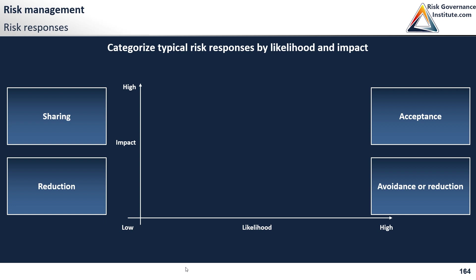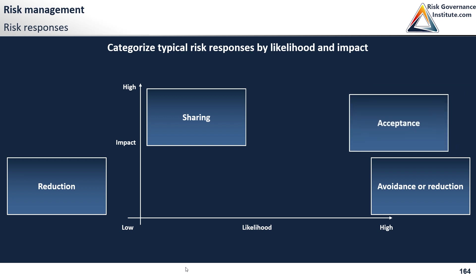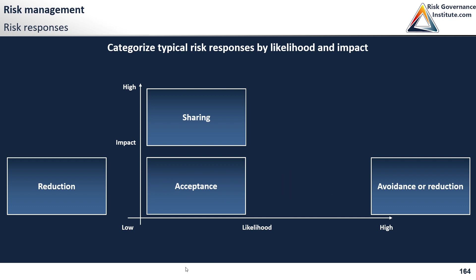Let me describe a scenario: you are afraid your house might be damaged by an earthquake. It is low likelihood and high impact. Usually it would be sharing — for example, through an insurance contract. Now think about low likelihood, low impact — that's bottom left. What response would you have? Well, here we're likely to accept the risk, because it would be within our risk tolerance.